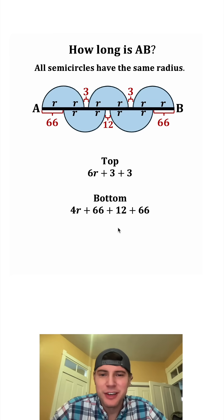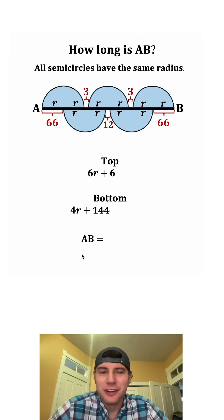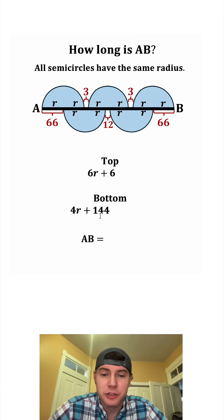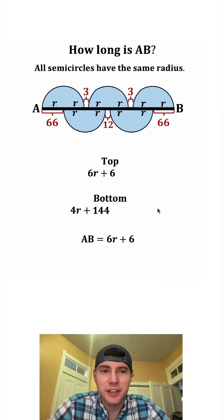And we can simplify both of these. 3 plus 3 is equal to 6. And 66 plus 12 plus 66 is equal to 144. And ultimately we're trying to find AB. AB is going to be equal to either this top equation or the bottom equation. Let's just use the 6R plus 6.